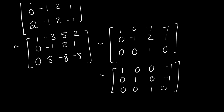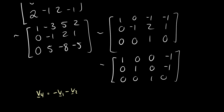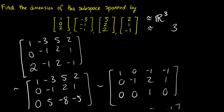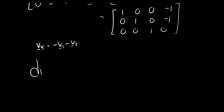What we see here is that vector v4 is just equal to negative v1 minus v2. The vector [2, 1, negative 1] equals negative of the first vector plus negative of the second: negative 1 plus 3 is 2, 0 plus 1 is 1, negative 2 plus 1 is negative 1. So v4 is a redundant vector and we can remove it, meaning these three vectors form the basis.